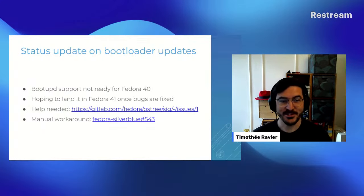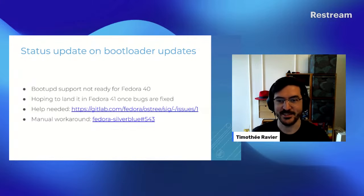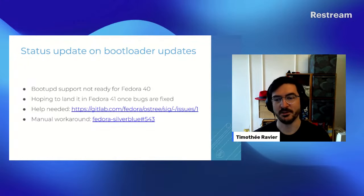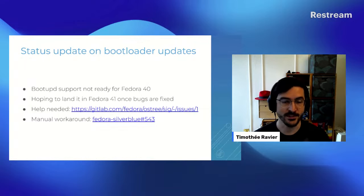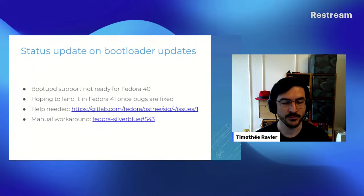Before we get into what's fun, there's a small detail about bootloader updates. The bootloader is not updated on Fedora Atomic Desktops. It was supposed to happen for Fedora 40, but there were a couple of things missing — bits in bootupd and bits in Anaconda. We're hoping to get all the fixes ready for Fedora 41. If you have a system using secure boot, for example, and it doesn't boot with newer kernels, you will have to run some manual workarounds. Everything is in the link in the slides, already linked on the Fedora release party page.